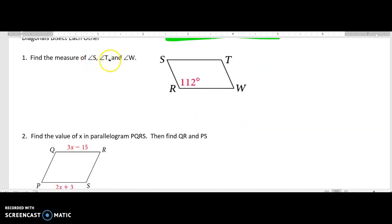So find the measure of angle S, T, and W. Well, right away, the easiest one to find the measure of is the opposite angle, which would be this one here. So angle T is just going to be 112 degrees, because it's opposite angle R.